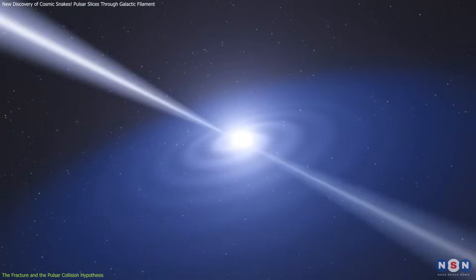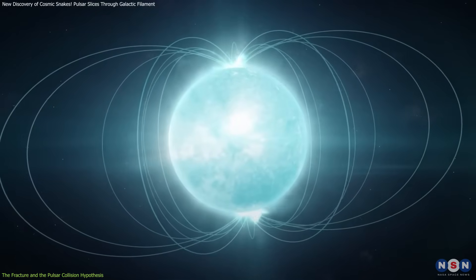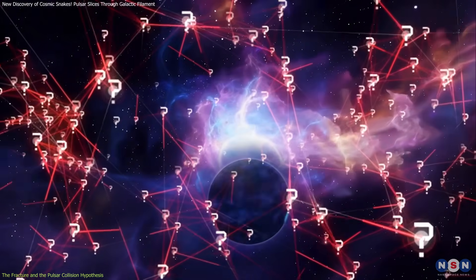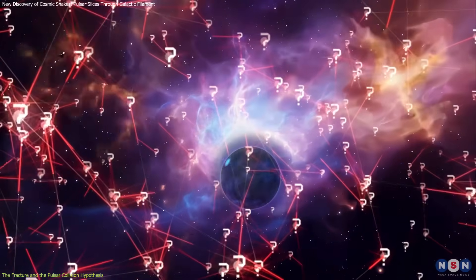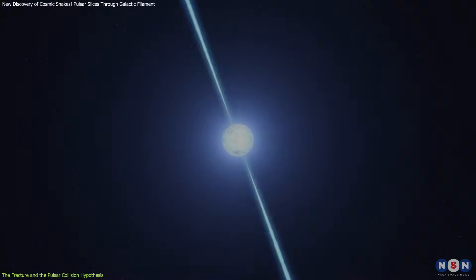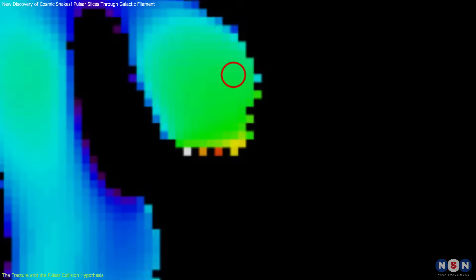Interestingly, while this pulsar has not been confirmed as a magnetar, a more extreme type of neutron star with vastly stronger magnetic fields, the possibility raises questions about how powerful such interactions can become. Even without being a magnetar, this object is energetic enough to leave a clear signature in the form of both a structural break and unusual radiation.